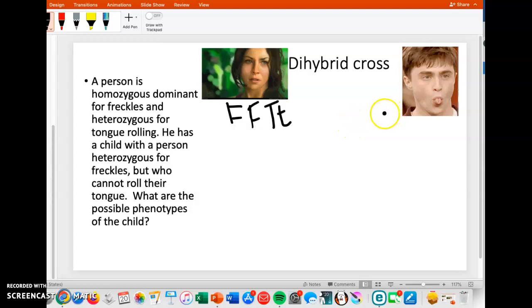Here's a child with a person who is heterozygous for freckles. So if they're heterozygous for freckles, it's big F little f. And who cannot roll their tongue. That's recessive, so if they cannot roll their tongue, then it's going to be little t little t. And this is the cross that we're doing.